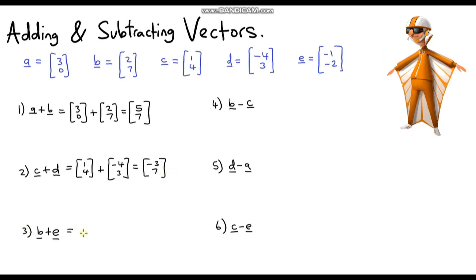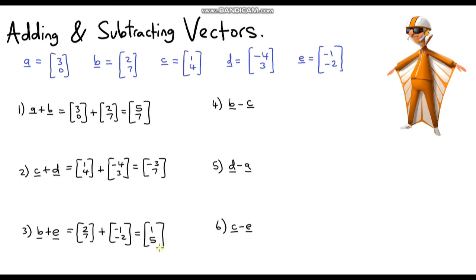Question 3: vector B plus vector E. Vector E is over here. Our resulting vector will be 2 subtract 1, which is 1, and then 7 subtract 2, which is 5. So the answer is (1, 5). Now let's move on to the subtractions.